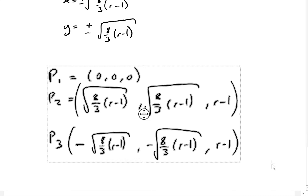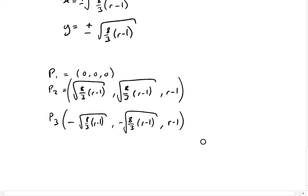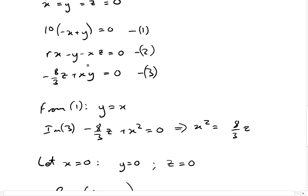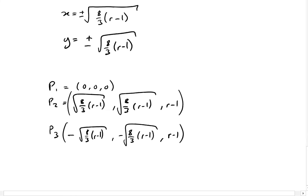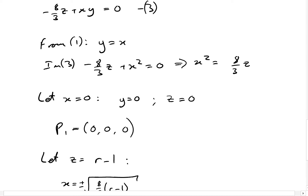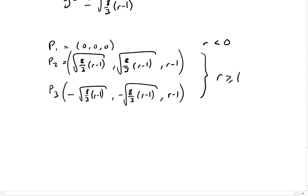Checking these values back in equation 2 gives us conditions: P1 only works if r is less than or equal to 0 (strictly negative); P2 and P3 only work if r is greater than or equal to 1. If r = 0 we lose x, so these are the conditions we impose to satisfy all three equations, and thus these are our three critical points.